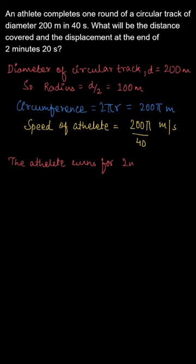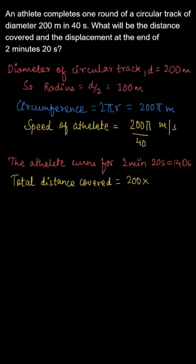Now the athlete is running for 2 minutes 20 seconds, that will be 140 seconds. So the total distance will be speed multiplied by time. Taking π as 22 by 7, we'll get the total distance covered to be 2200 meters.